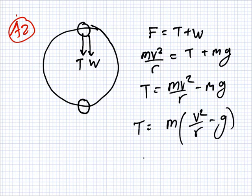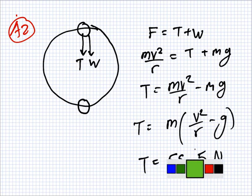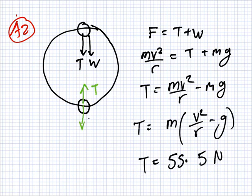So you get the tension here in this situation is 55.5 newtons. Now the only difference down the bottom is that the tension acts up and the weight acts down. So the only difference in the second case is that this should be a minus, which makes this a minus.